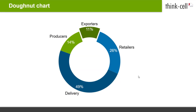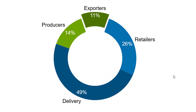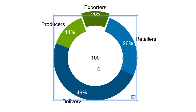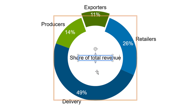Additionally, you may add a title label to the very center of the donut chart. Right-click onto the donut hole and select Add Title from the context menu. By default, the label shows the absolute total of the chart, but you can also use it differently — for example, by typing text directly into it.